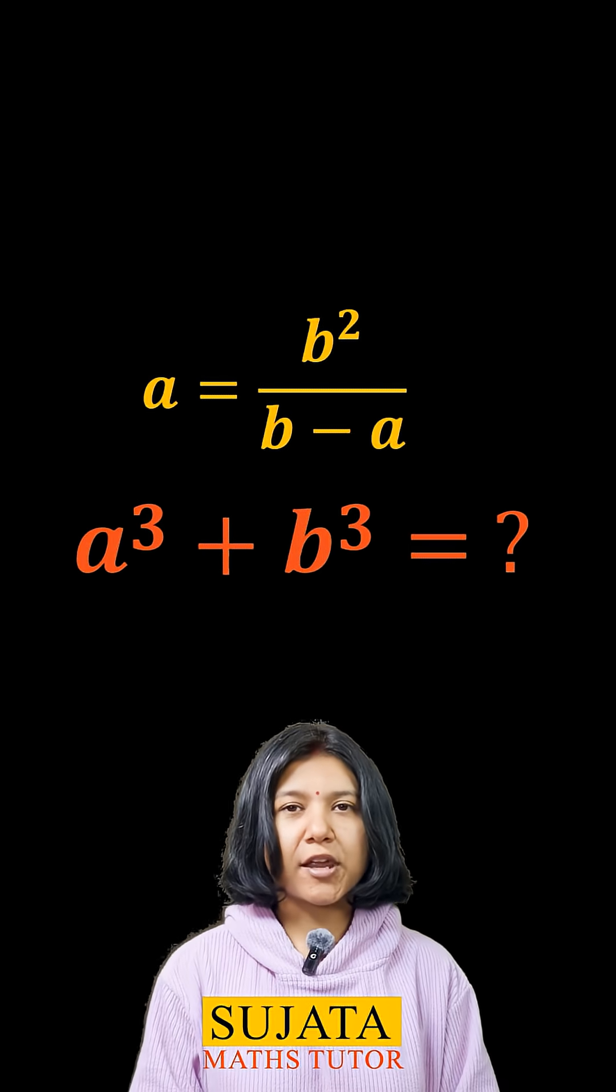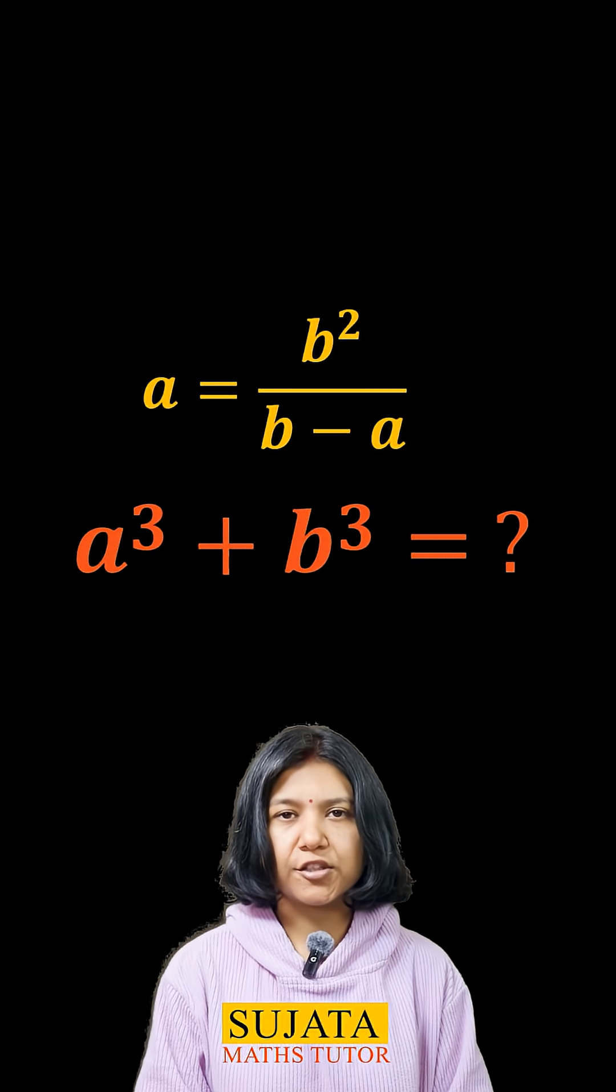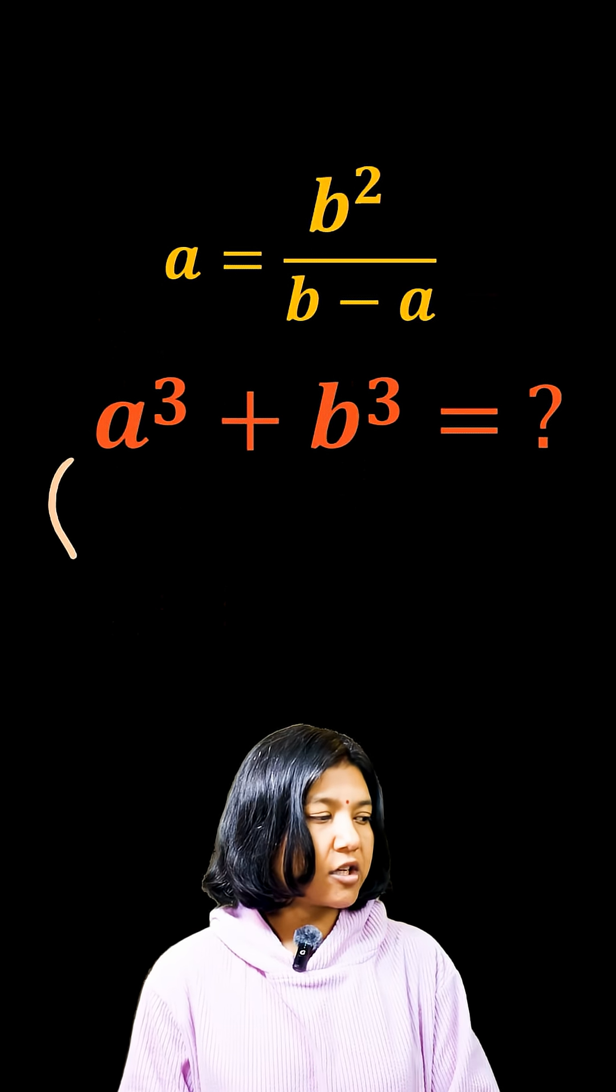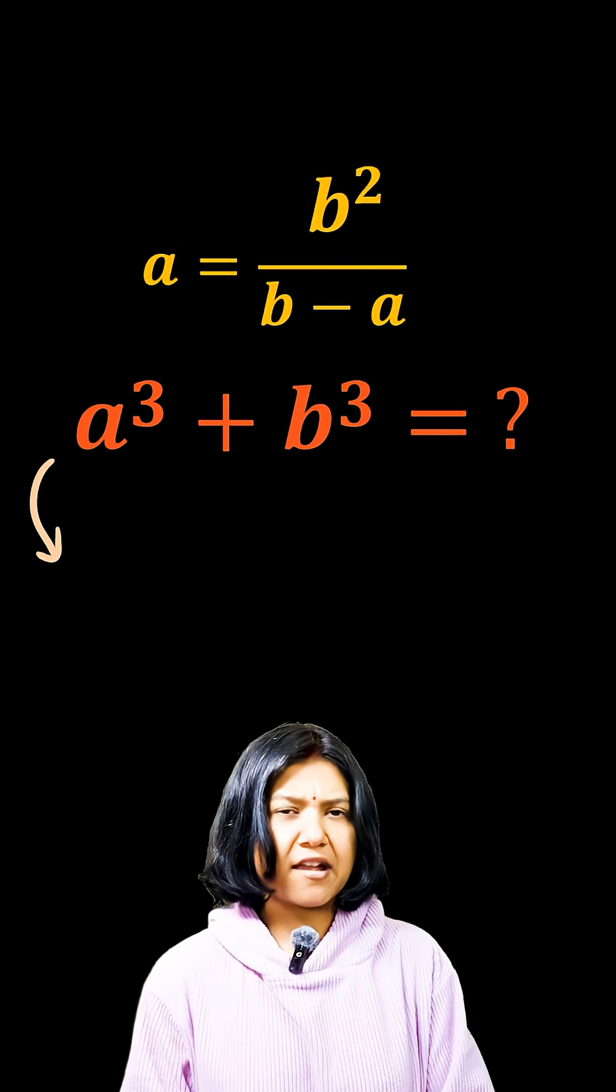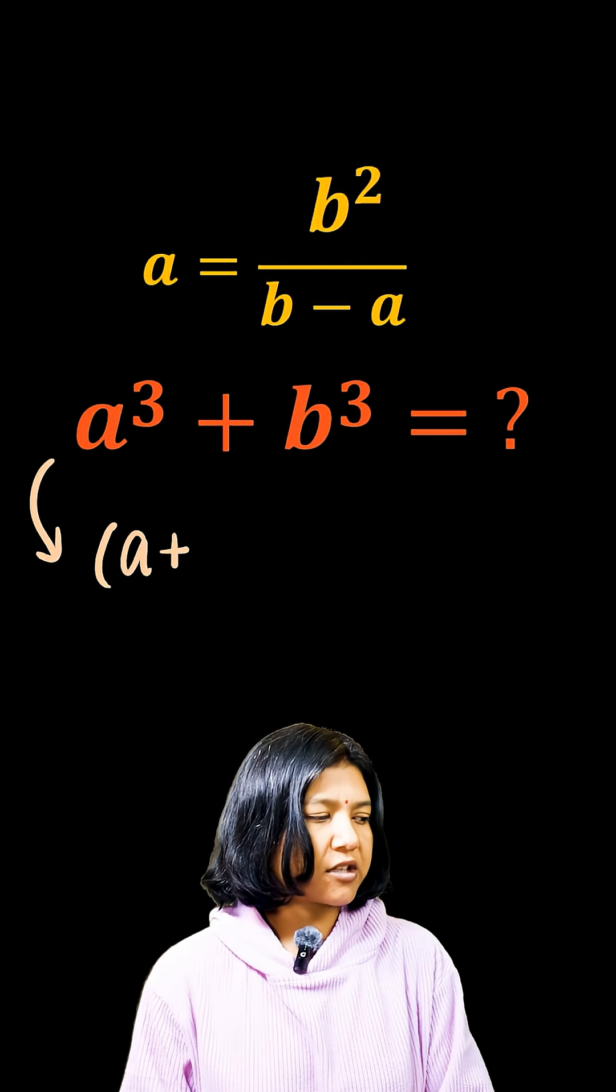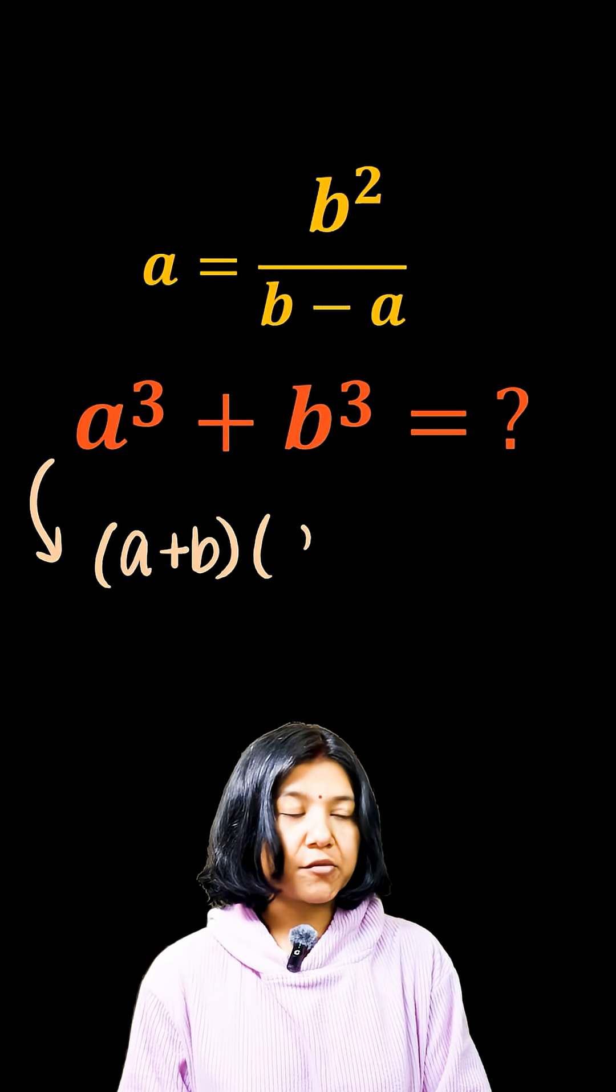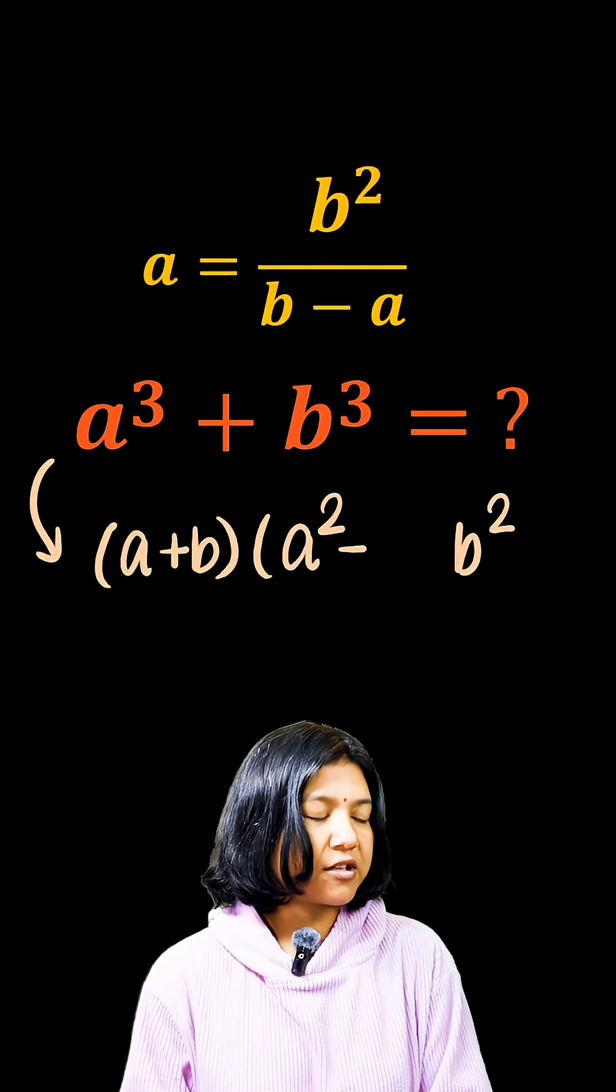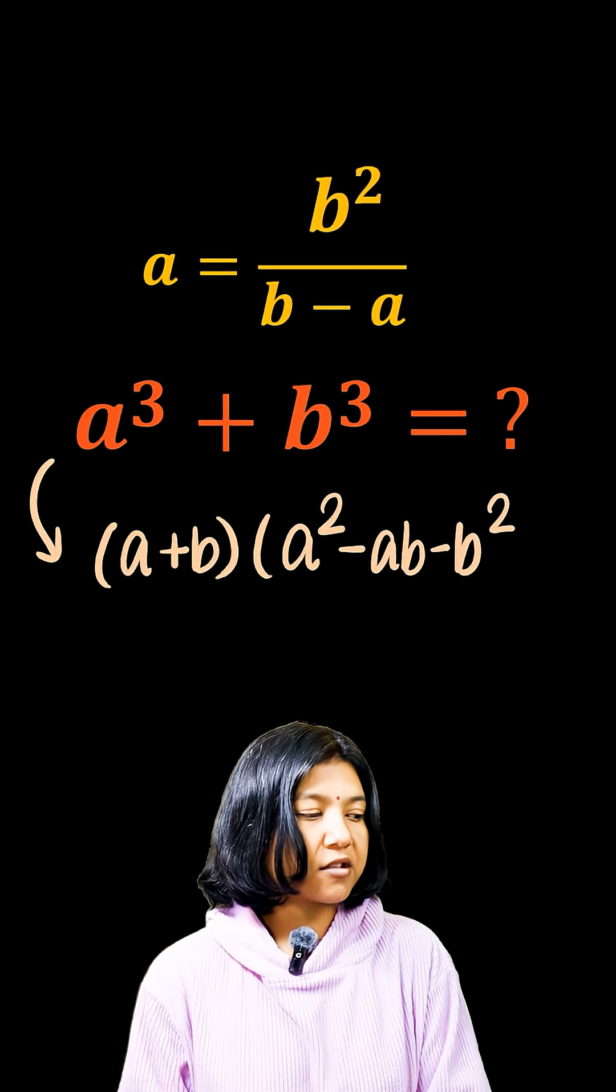To approach a question where you have the sum of cubes given to you, you want to remember the formula for finding the sum of cubes. The sum of cubes can always be expressed as the sum of the two numbers that you're cubing times the other factor, which would be to square the first term, to square the second term, and what you really do is subtract the product of the two.